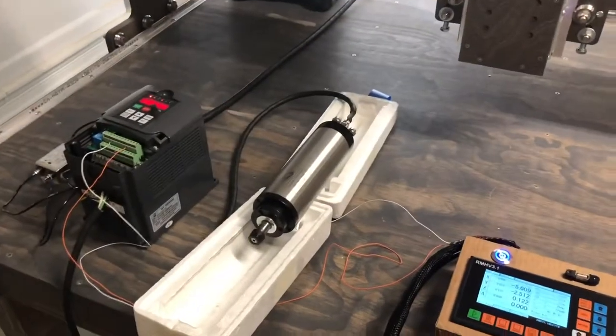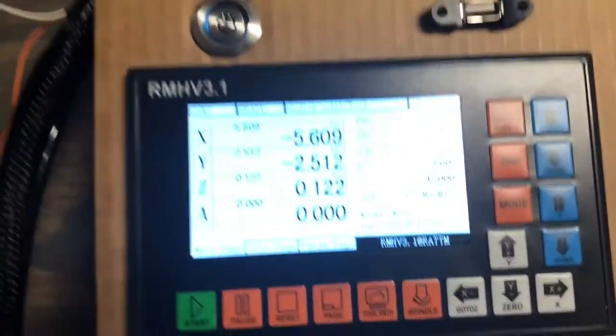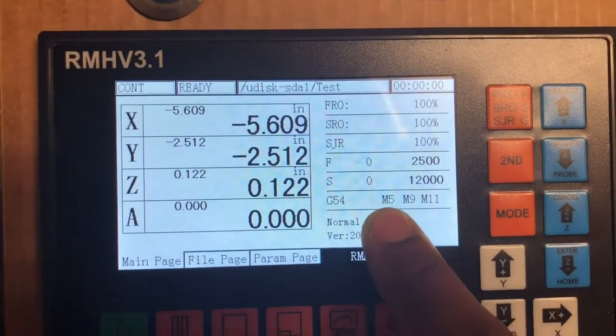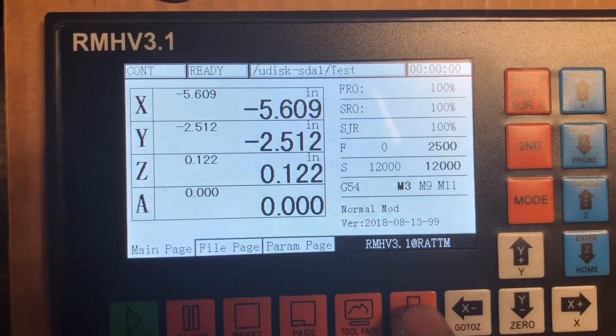There we go. I guess I can kind of show you what it looks like here. This M5 moves down to three when the spindle starts.